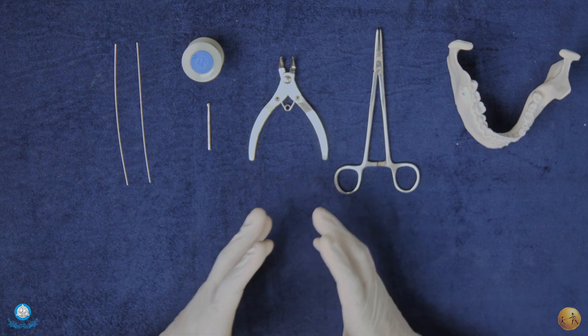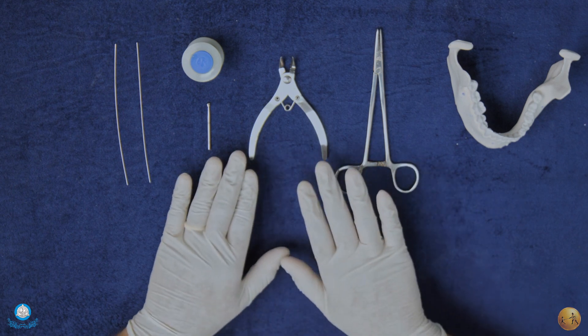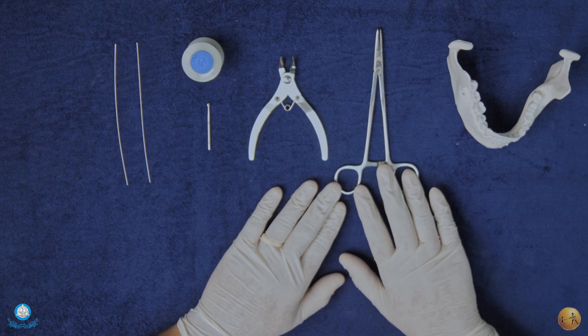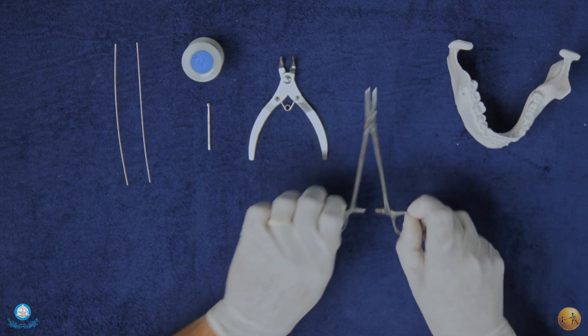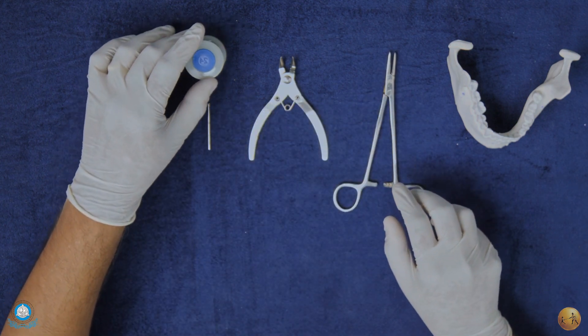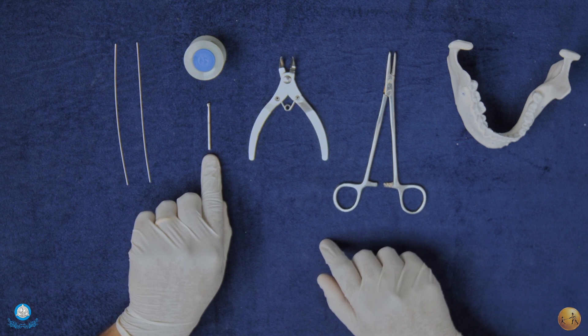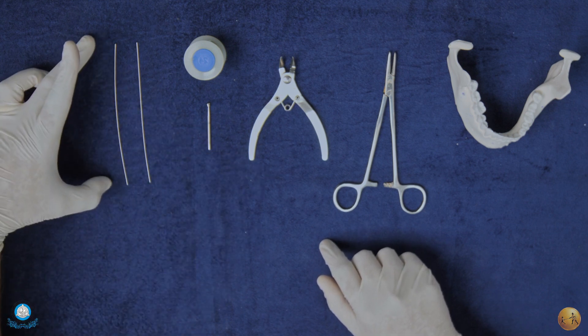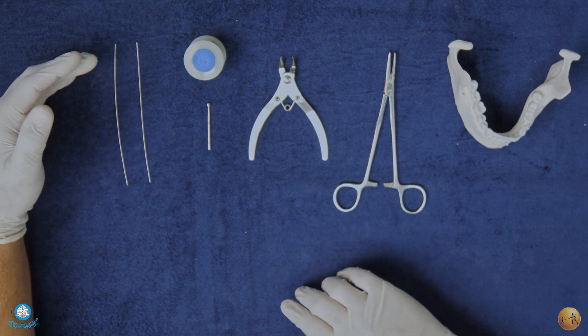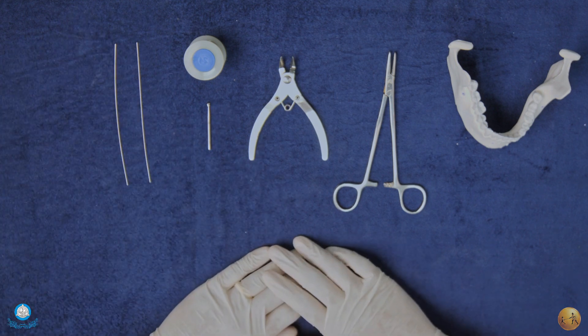Before we start, we'll quickly talk about the armamentarium. We have a needle holder, a wire cutter, and we can also use a wire bender or wire twister like in this case. We have a 24 gauge wire, a surgical length burr, and the wire that has been pre-stretched, that is cold worked to up to 10% of its total length and then cut to approximately 10 to 15 centimeter lengths.